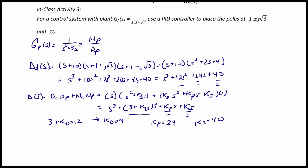So the controller, GC of S, is equal to 9S squared plus 24S plus 40 over S.